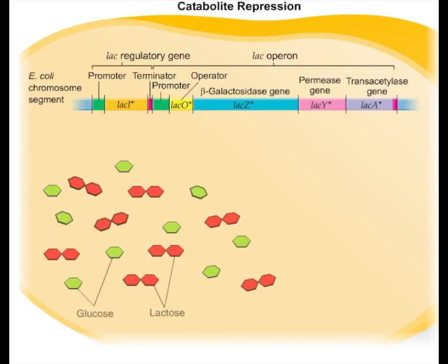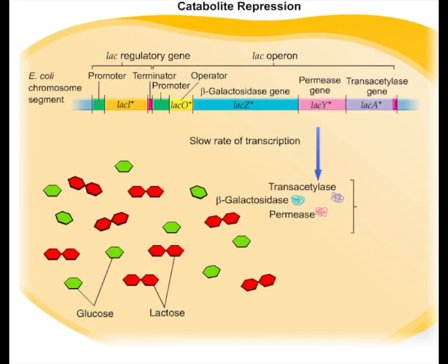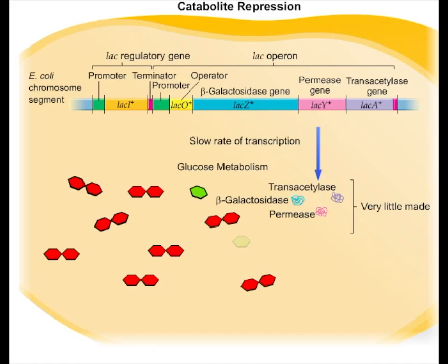When both glucose and lactose are available, the genes for lactose metabolism are transcribed, but at such a slow rate that lactose is metabolized only slowly. This is because of a mechanism called catabolite repression.